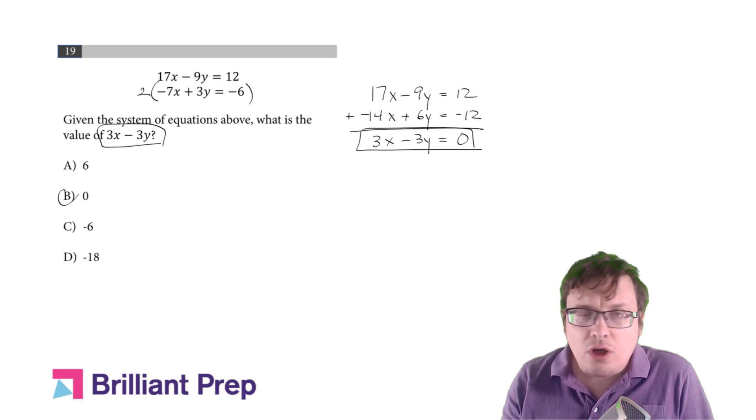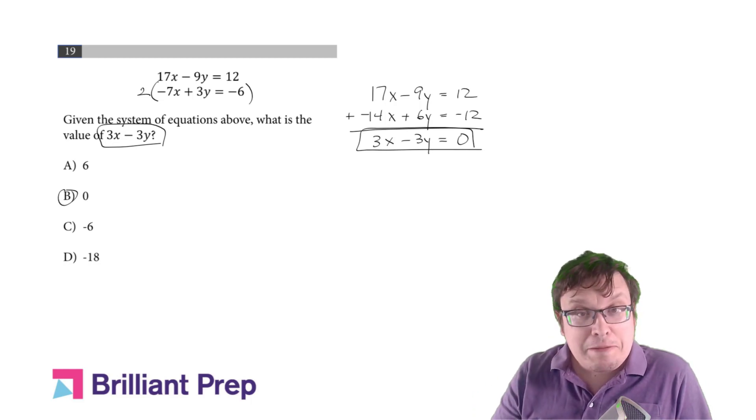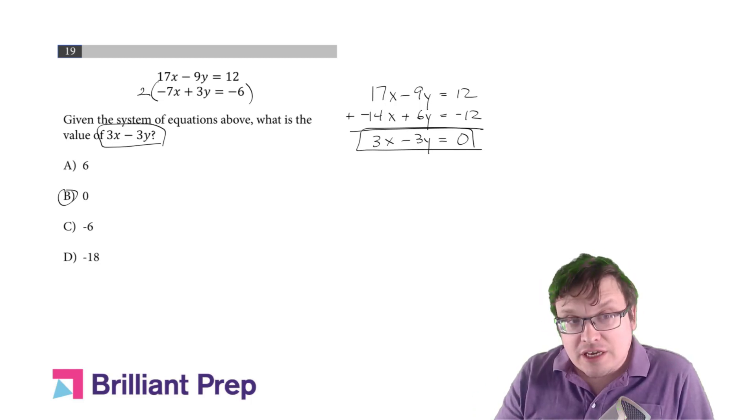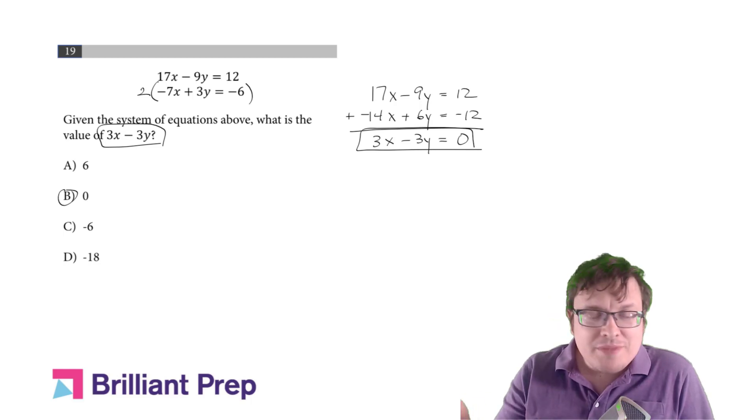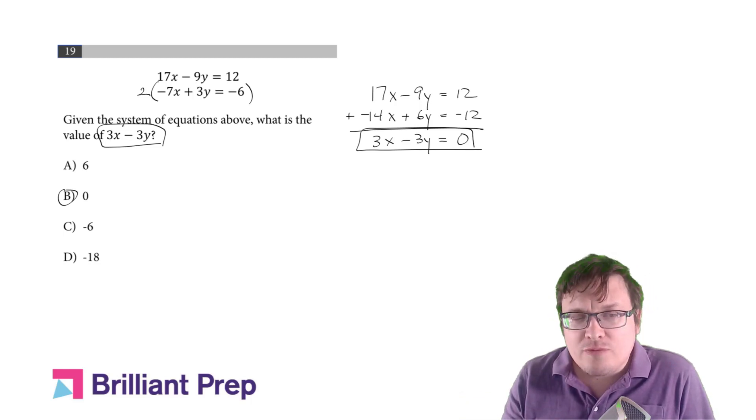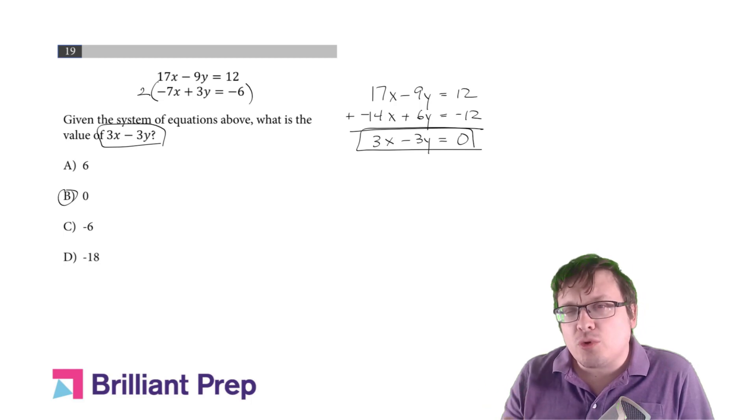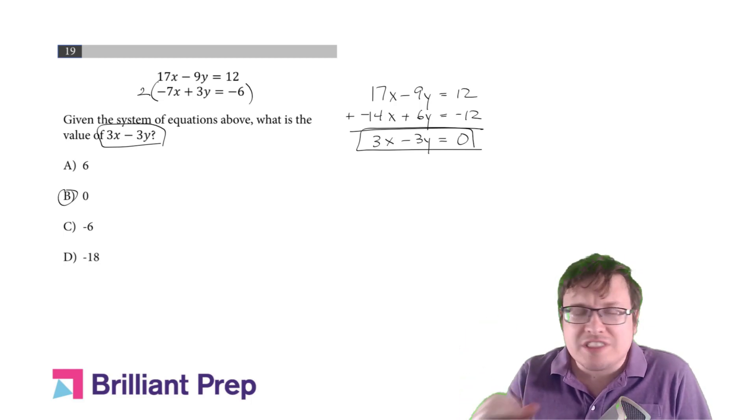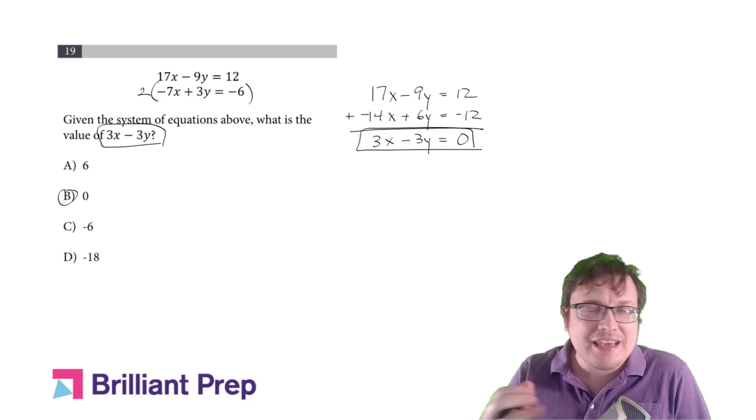If you did it the long way, it probably was annoying, but you can get the answer. If you want to do it the short way, here's the best way to do it. When they're looking for something weird, see if there's a little shortcut. See if you can just add them or do a simple operation to combine them to get what you're looking for.